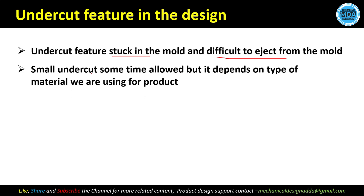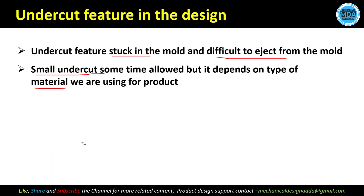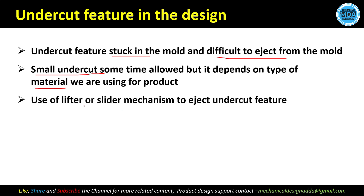Sometimes small undercuts are allowed — it depends on the material and manufacturing process. In rotational molding, which is a zero-pressure process, the material leaves the wall and shrinks, so small undercuts can be ejected. But in injection molding there is high pressure, so we need a good drafted design that is free from undercut features.